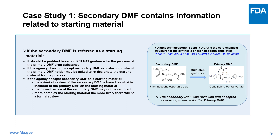In the example shown here, for the synthesis of API cephalexin, the primary DMF refers to a secondary DMF for the synthesis of its starting material, 7-aminocephalosporinic acid. During the review, the secondary DMF was evaluated for the information needed as a starting material for the primary DMF API synthesis and was accepted.